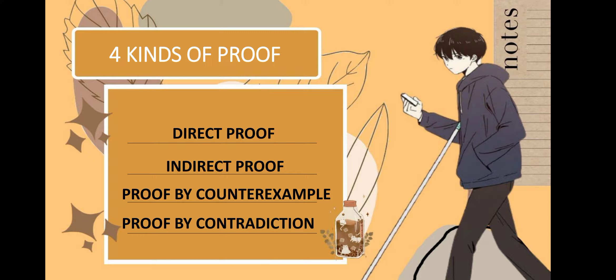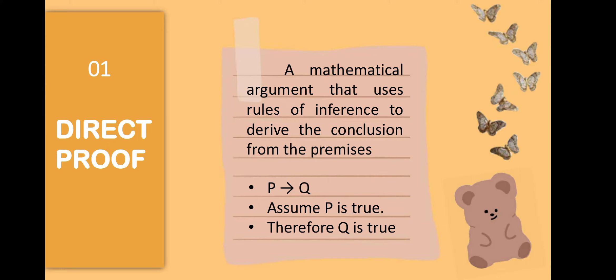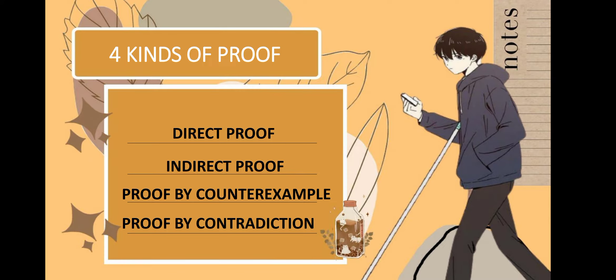If you have read the module, there are 4 kinds of proof and these are the following: direct proof, indirect proof, proof by counterexample, and proof by contradiction.